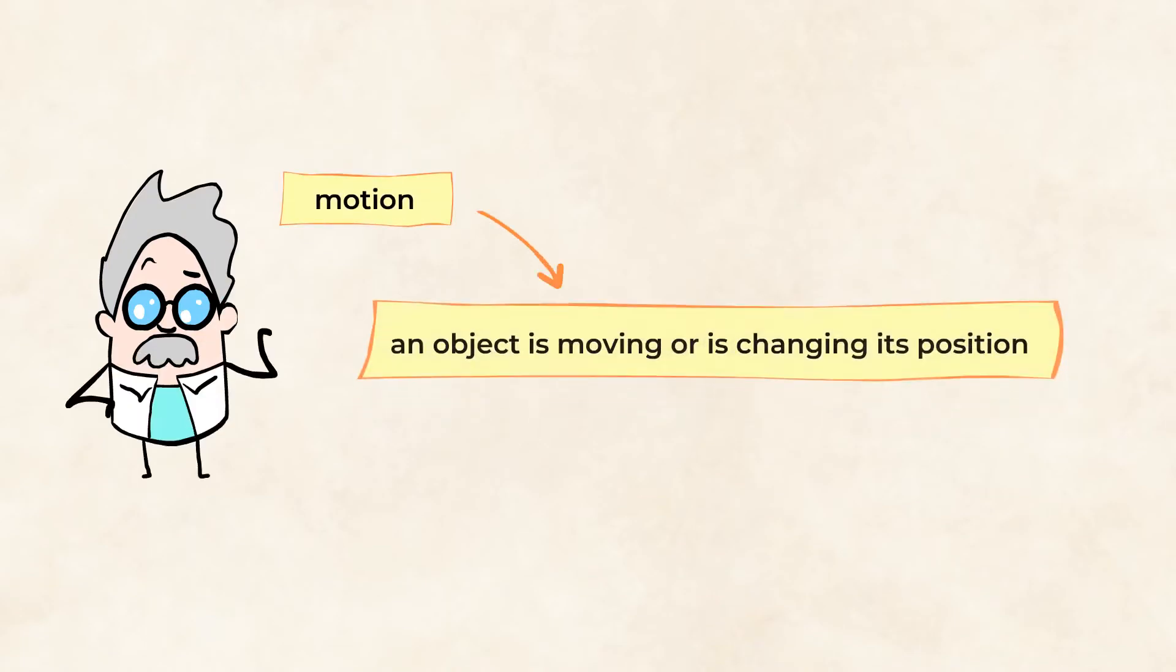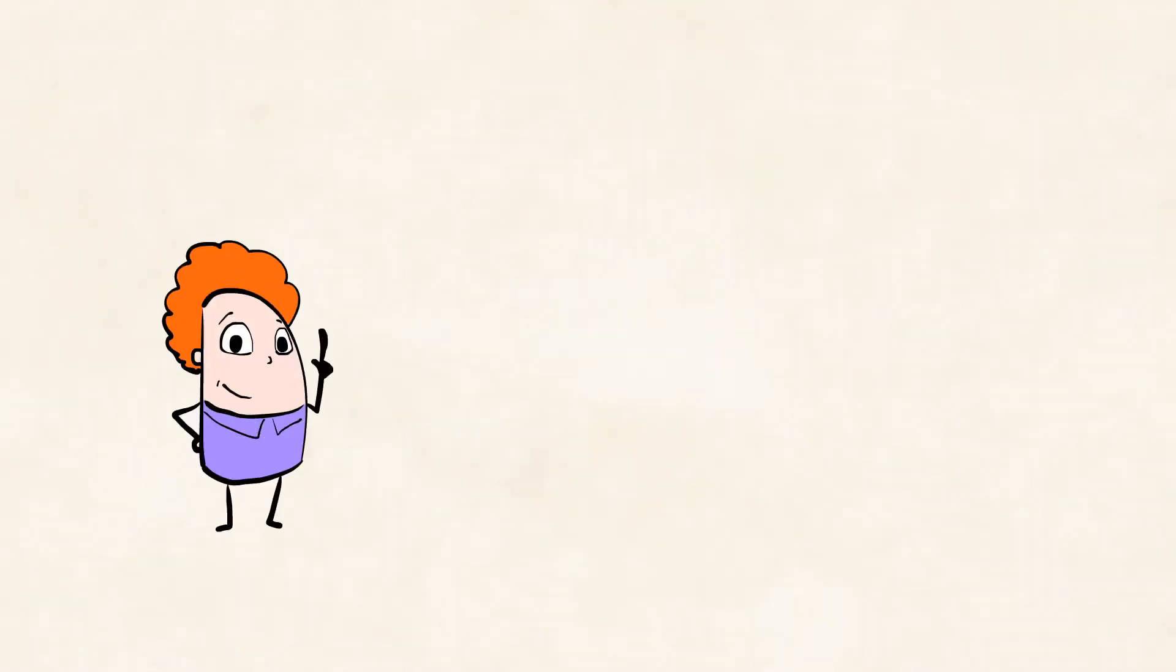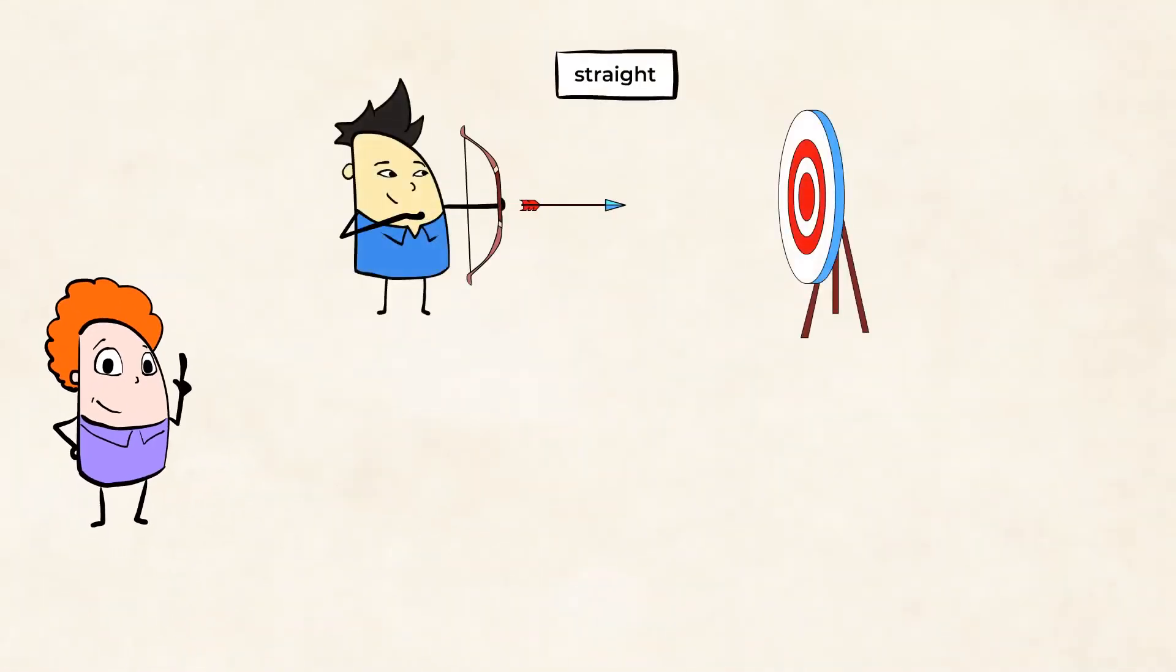Motion is the process in which an object is moving or changing its position. Motion can be straight. Think of an arrow being shot at a target.